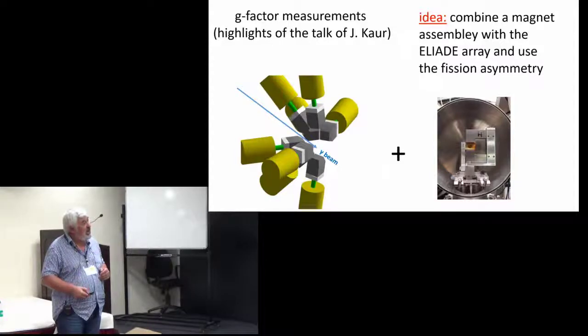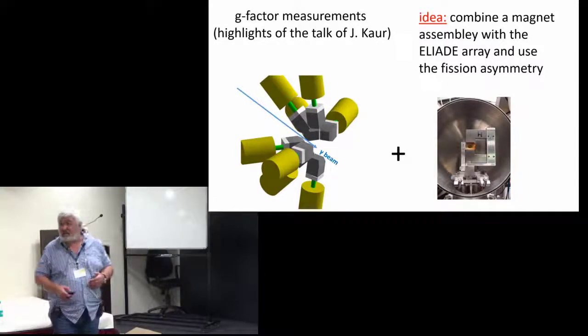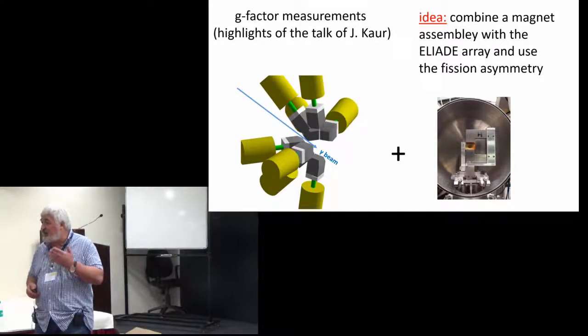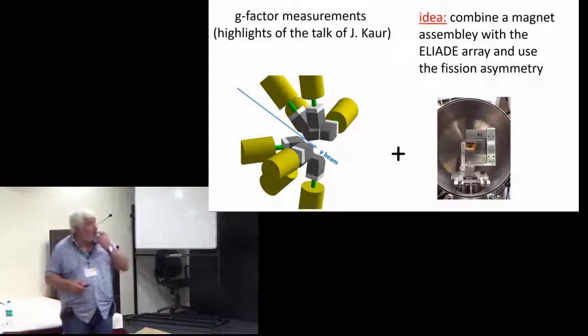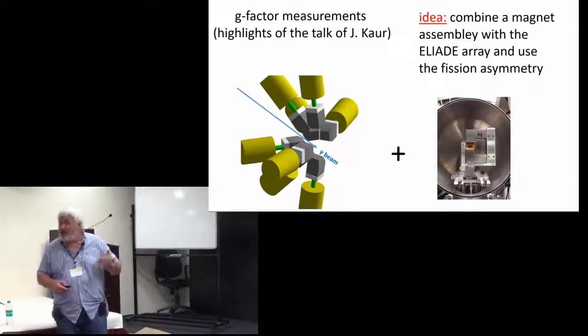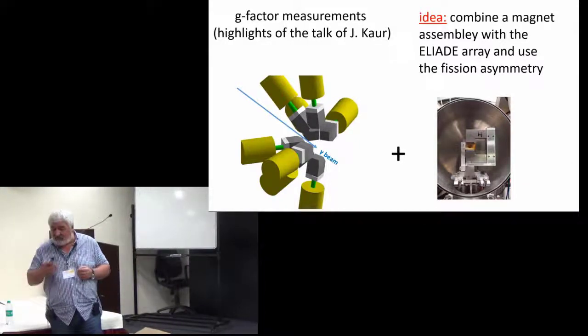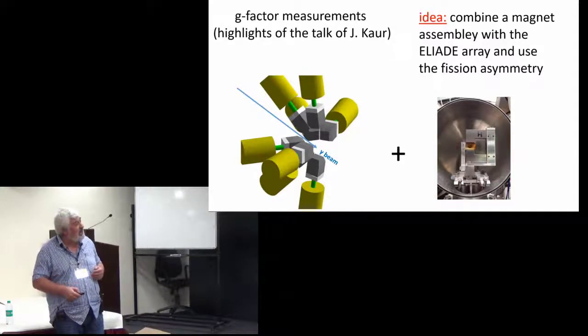We can have a target which is a multi-layer target of uranium coupled to some good hosts like iron or nickel, and this can be put in the field of a permanent magnet.